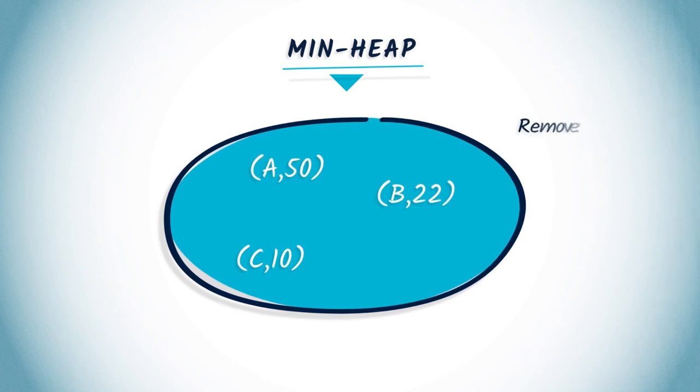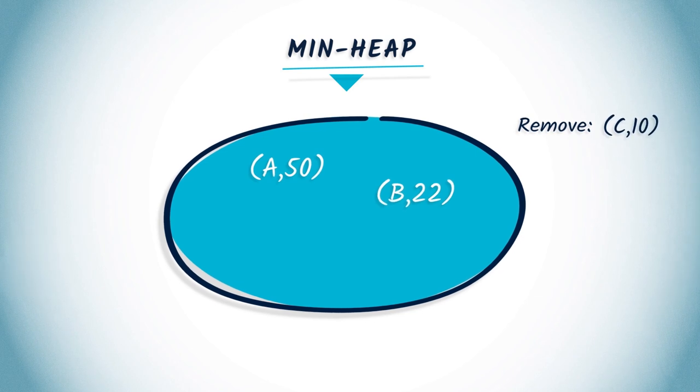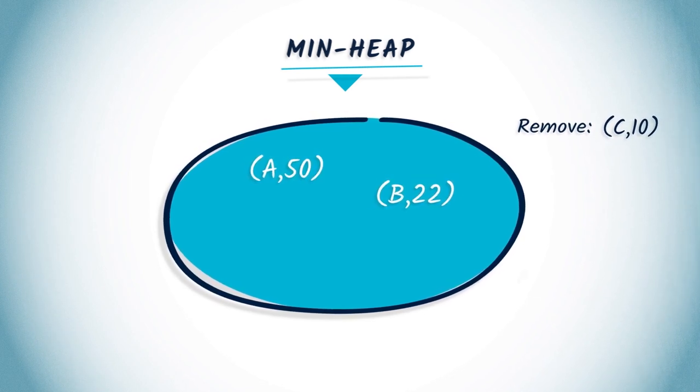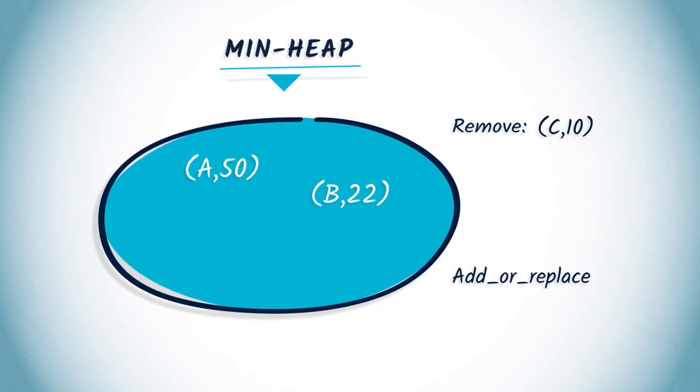Now let's remove a value from this min heap. This operation will return C 10 and the status of the min heap will be A 50, B 22. Let's now ADD OR REPLACE in the min heap with the couple B 45. Because 45 is greater than 22, nothing happens.